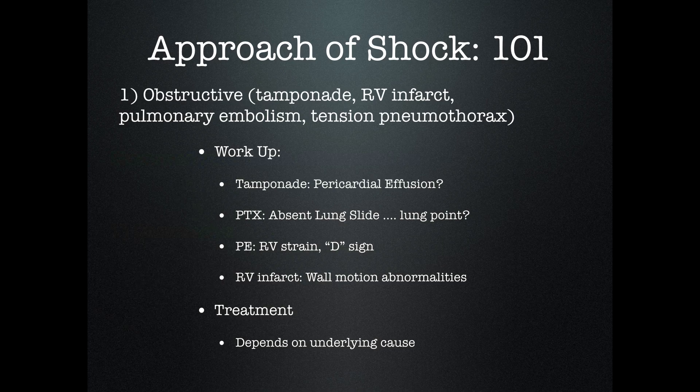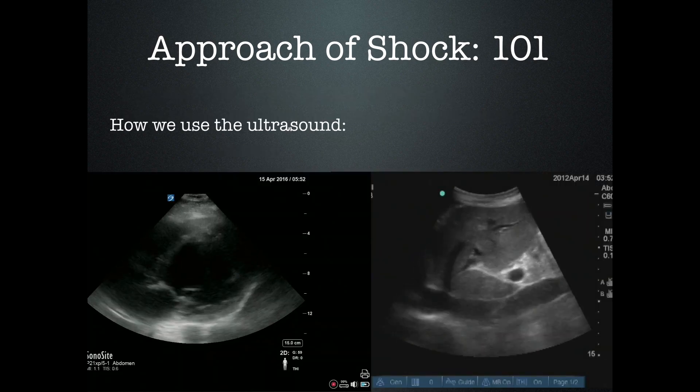That's where your differential goes. Now take your ultrasound — go look for a pneumothorax, go look around the heart to see if there's a pericardial effusion, go look at the heart to see if the right side is massively bigger than the left side. It's going to lead you in a direction to figure out what's going on. It's not going to tell you the answer — you can see a big right side of the heart and think it's a PE, but it may just be pulmonary hypertension from cor pulmonale. But you know that giving this patient a tremendous amount of fluid probably is not going to help much.